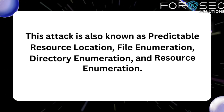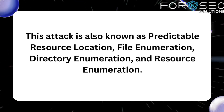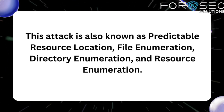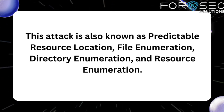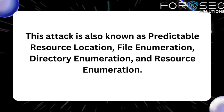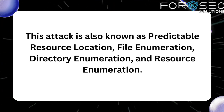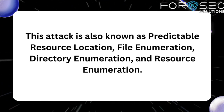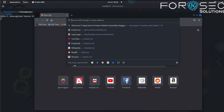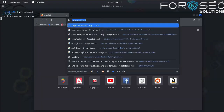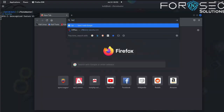This attack is also known as predictable resource location, file enumeration, directory enumeration, and resource enumeration. To get started, search for Ferox Buster on GitHub.